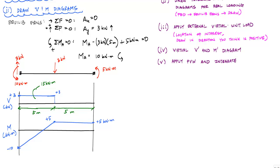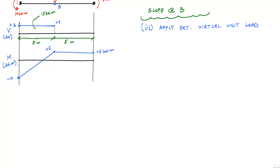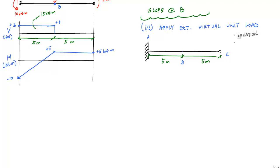The next steps are focused on calculating the slope at point B. This involves applying the external virtual unit load on the structure. We apply the virtual unit load at the location and in the direction we want to know the rotation, so I'll apply a unit moment counterclockwise at point B. It doesn't really matter which direction you assume — the calculation will correct itself if the sign comes out negative.